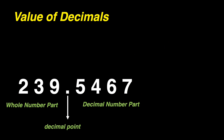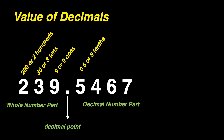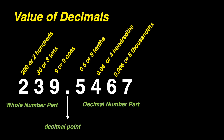For the value of our decimals: our 2 has a value of 200, or two hundreds. Our 3 is 30, or thirty. Our 9 is 9, or nine ones. For 5, we have a value of five-tenths. For 4, that's four-hundredths. For 6, that's six-thousandths. And for 7, that's seven ten-thousandths.